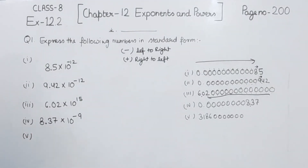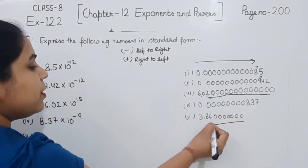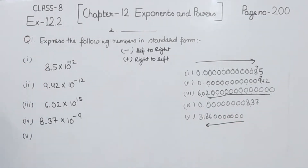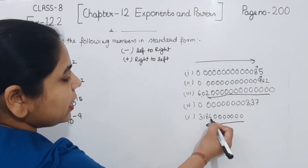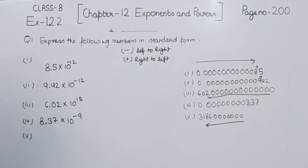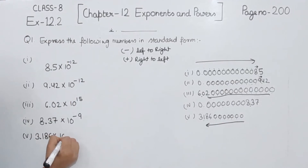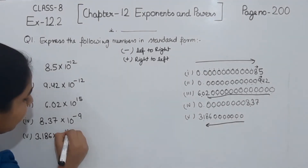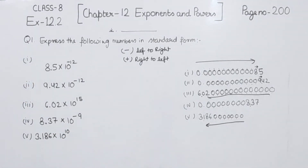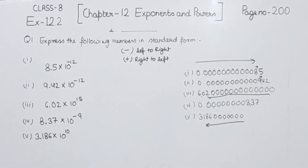Now comes part 5. We will shift the decimal from right to the left. Counting the places: 1, 2, 3, 4, 5, 6, 7, 8, 9, and this one is 10. So I am going to write here 3.186 multiplied by 10 to the power 10. We have counted the places as 10, so 3.186 × 10 to the power 10 is the standard form for part 5. So we have completed question number 1 and in the next video we will start with question number 2.